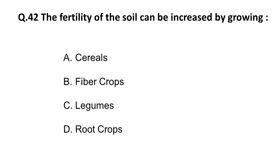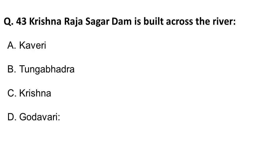Next question: the fertility of the soil can be increased by growing — this is a very common question. Fertility of soil can be improved by legumes, because legumes have root nodules with properties of binding atmospheric nitrogen — a process called nitrogen fixation, which you may have learned in primary or secondary science education. The correct answer is legumes, option C.